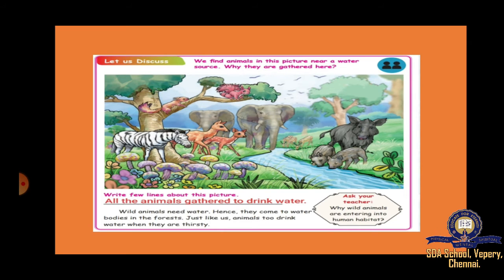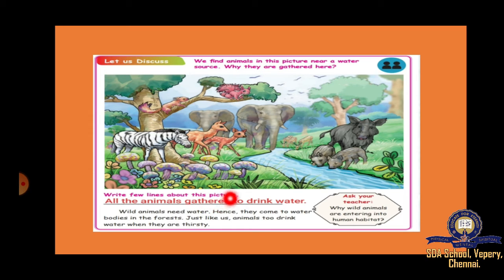See this picture — we find many animals here. Tell me, why are they all gathered here? Because these wild animals need water to drink. All the animals gather to drink water, so they come to water bodies in the forest. Just like us, animals drink water when they are thirsty. That is why all the animals gather at water bodies.